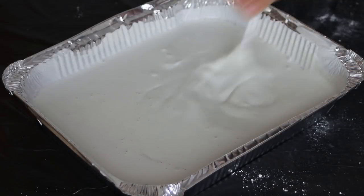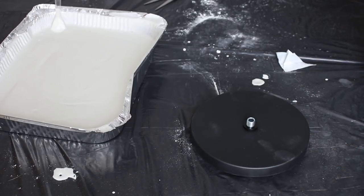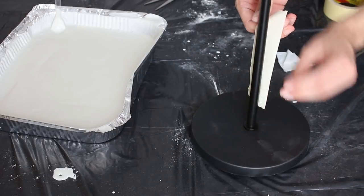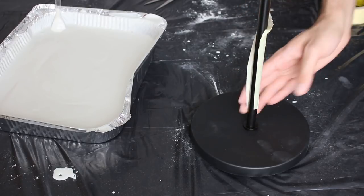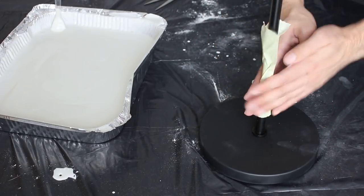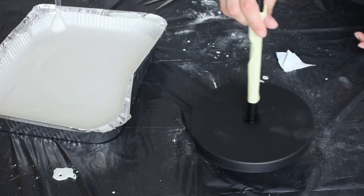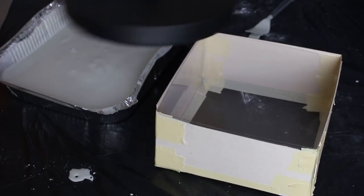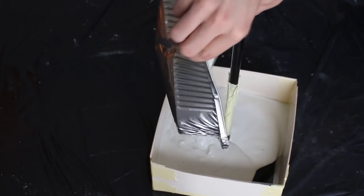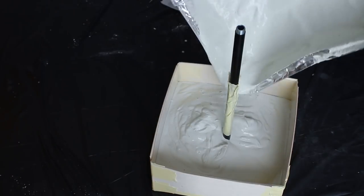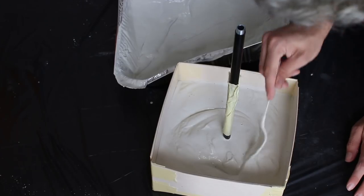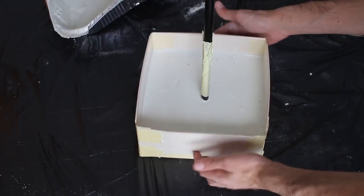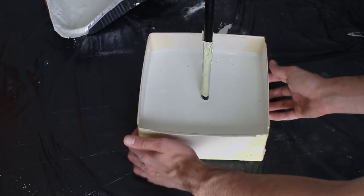Before you pour the concrete, cover the parts that touch the mixture and you don't want them to get dirty. Now that's the right consistency your concrete mixture should be like. Place the base of the lamp in the middle and put the concrete over. Tap to release unwanted air bubbles to get a fine result at the end.